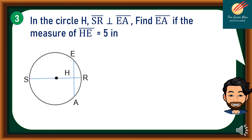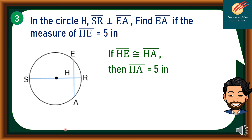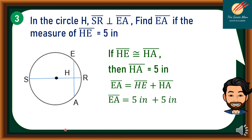Let's consider problem number 3. In circle H, SR is perpendicular to EA. Find EA if the measure of HE equals 5 inches. Since SR is perpendicular to EA, HE is congruent to HA, so HA equals 5 inches. Therefore, EA equals HE plus HA, which is 5 plus 5, so EA equals 10 inches.